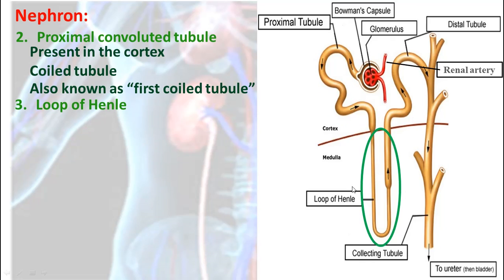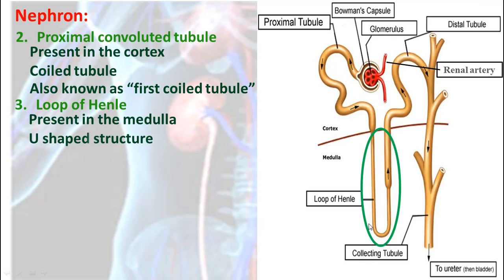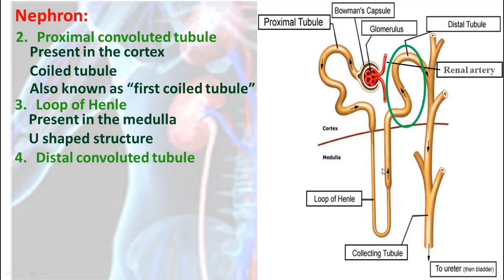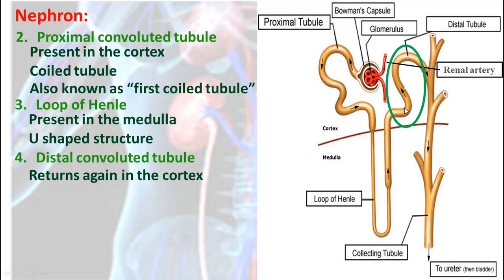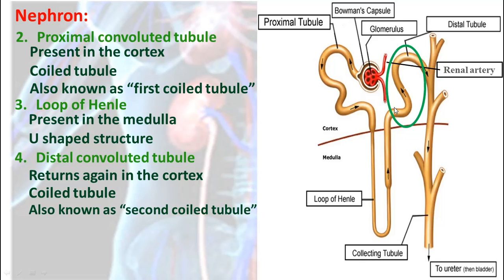The third part is the loop of Henle. The loop of Henle enters into the medulla and it is a U-shaped structure. The fourth part is the distal convoluted tubules — also a convoluted tubule, but this is far from the beginning of the nephric tubule, so we call it distal. Distal, similar to distant, means away. The distal convoluted tubules, also called the second convoluted tubules, are also present in the cortex.